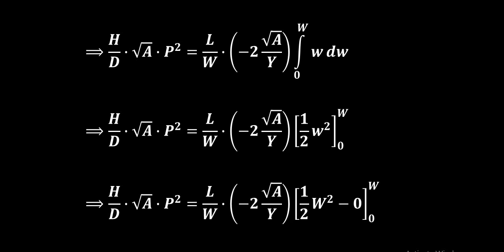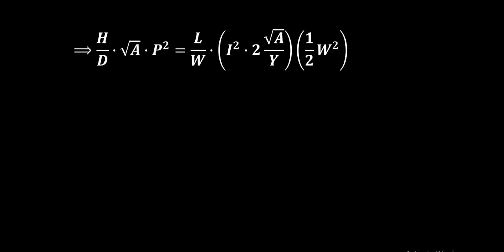Half of W square minus 0. After calculation we find that H by D into root A into P square equal to L by W. Now recall that in place of minus 1 we can write i square.